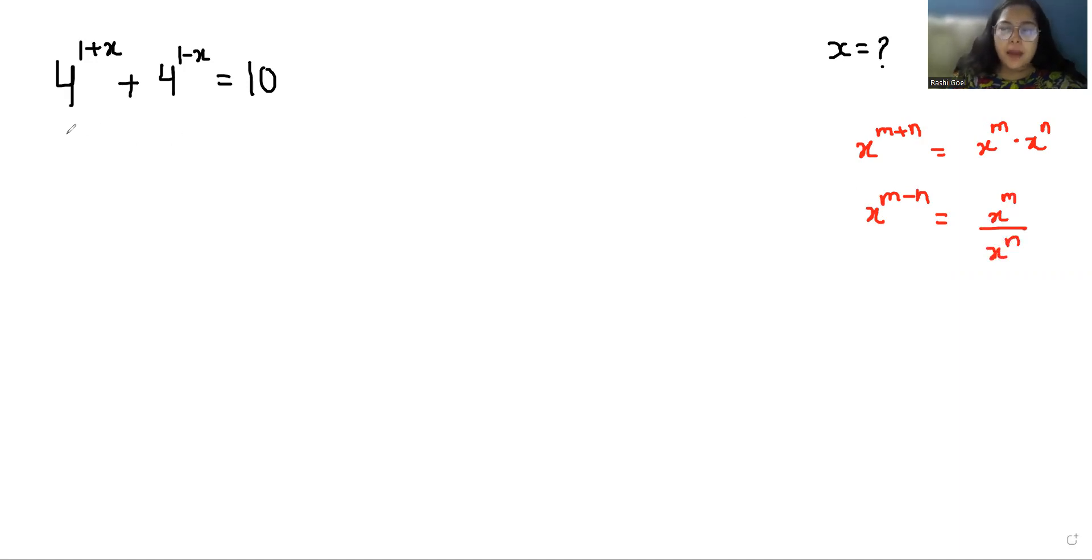So here I'm going to use the first two. So 4^1 times 4^x plus 4^1 divided by 4^x. This 10 comes with this 10, so negative 10 equals 0.